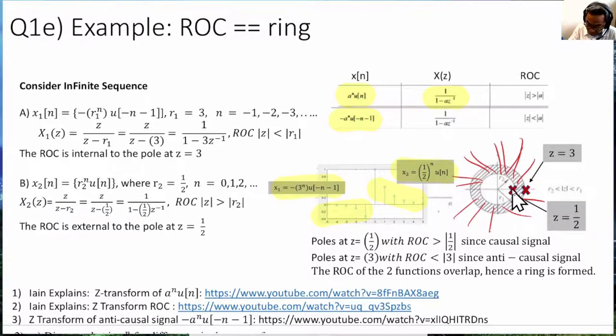Now, for the other region of convergence, at z equals to 3, we draw internal to him, the green guy. Because, for z equals to 3, this is for the anti-causal sequence. Z equals to half is the pole for the causal sequence.